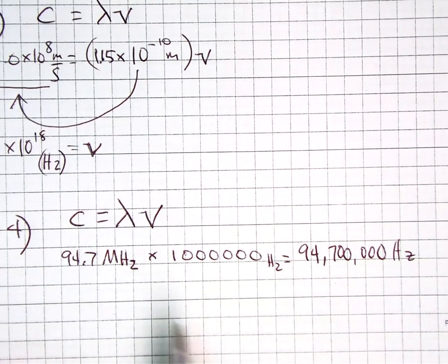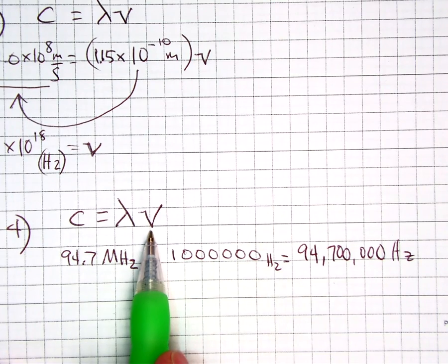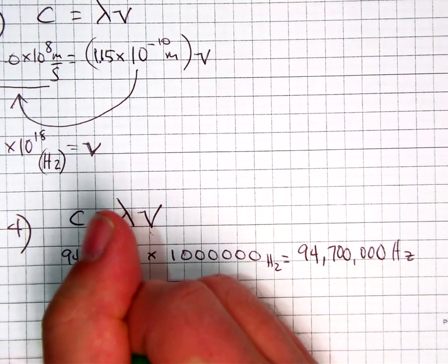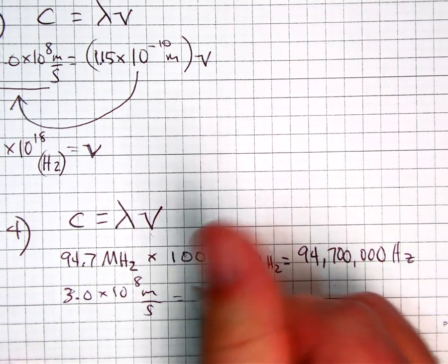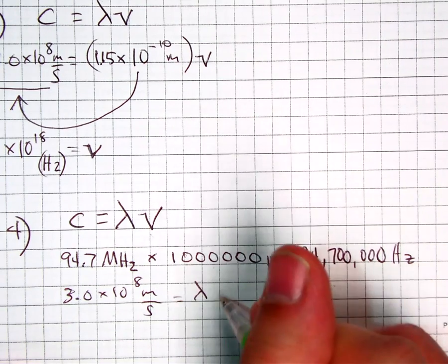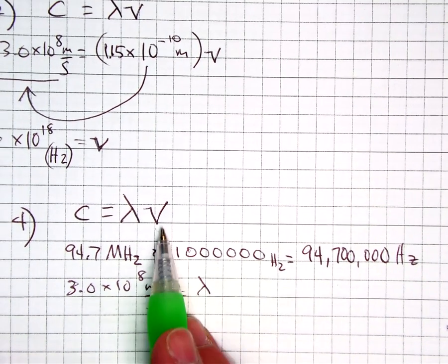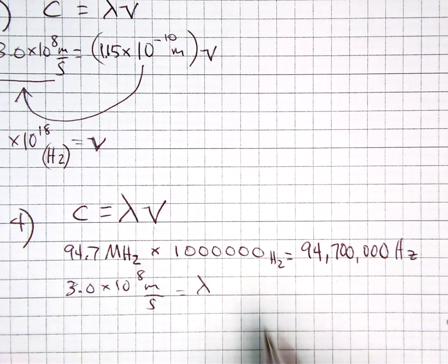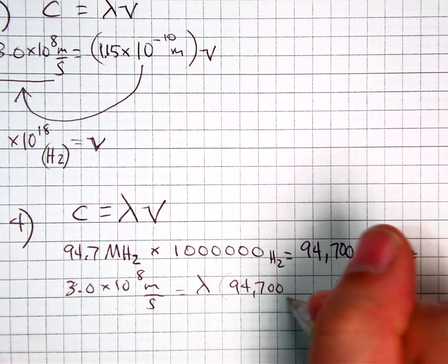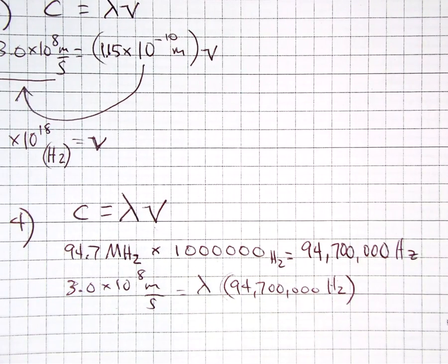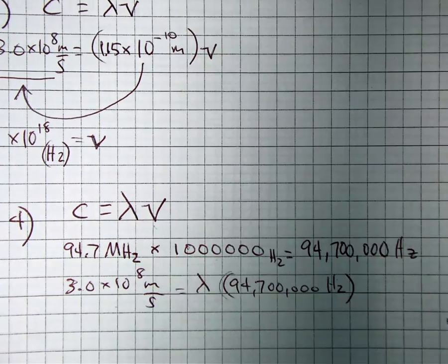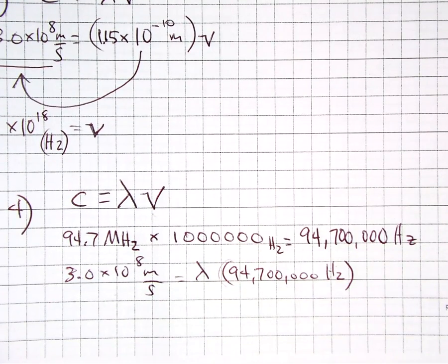Now, I can use at this point the regular formula C equals lambda nu. I know what C is. We've never changed. 3.0 times 10 to the 8th meters per second. That's the speed of all waves. Now, before we were solving for frequency. But now we're going to solve for lambda. So, what I'm going to put over here is 94,700,000 hertz. How do I isolate my lambda symbol now? Is there any major difference than the last type of problem? Not really. I've got to get that lambda symbol all by itself. So, what do I do again? Divide.